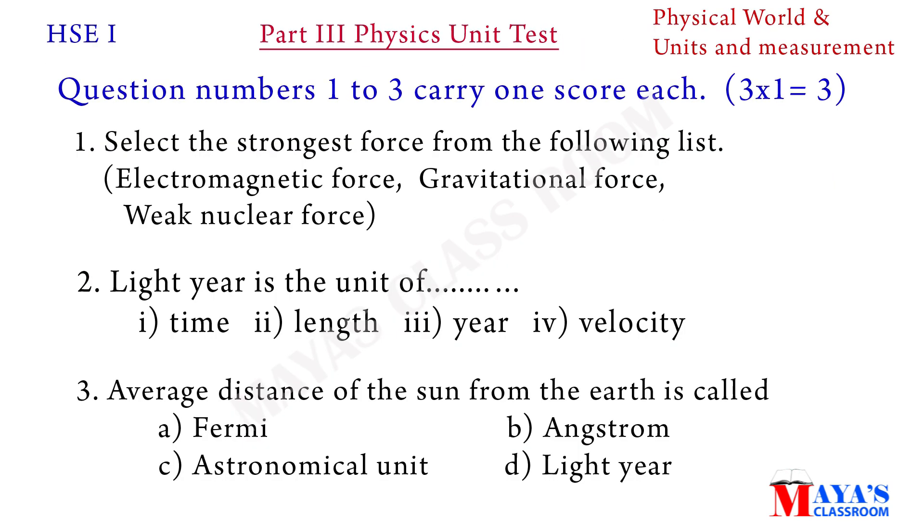Question numbers one, two, three carry one score each. First one: select the strongest force from the following list - electromagnetic force, gravitational force, weak nuclear force. Second one: light year is a unit of - one time, second length, third option year, fourth option velocity.